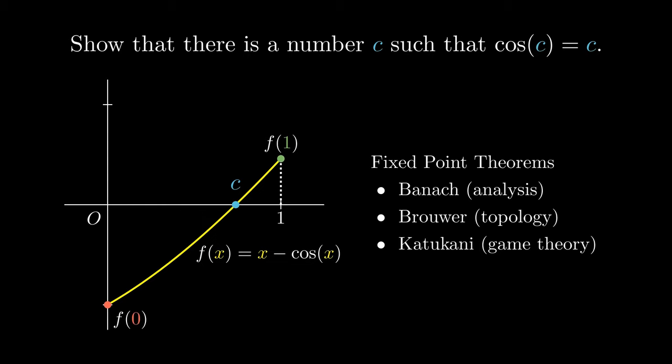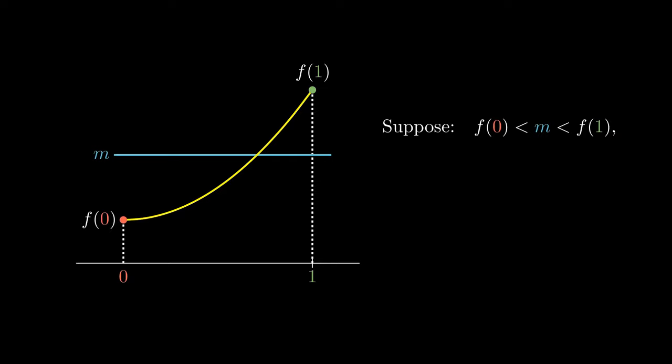So far, we have been looking at the intermediate value theorem in terms of the existence of roots, but this idea generalizes very easily for any value that lies between f(0) and f(1). If the function is continuous, it must intersect the line y equals m at least once. More formally, there exists some real number c, such that f(c) equals m.